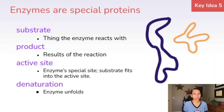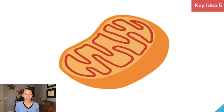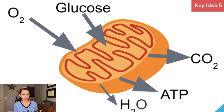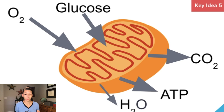Lots of different enzymes are used all throughout our bodies and cells, and there are also enzymes within the process of cellular respiration that help certain reactions to occur. Cellular respiration is the process where we take in glucose and oxygen, and through a series of biochemical reactions, we produce carbon dioxide, water, and ATP — which is our energy molecule.